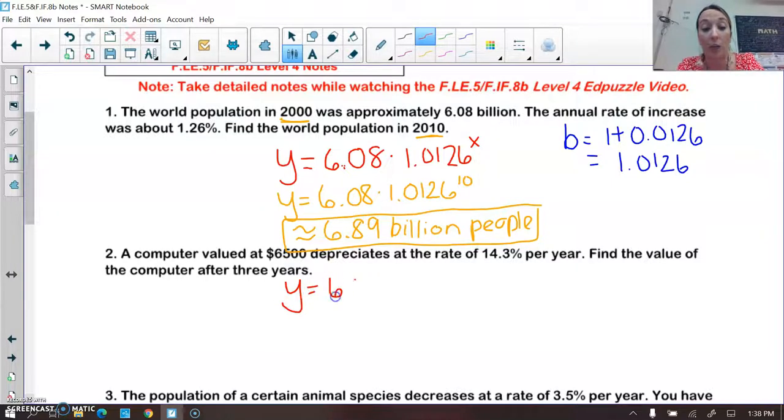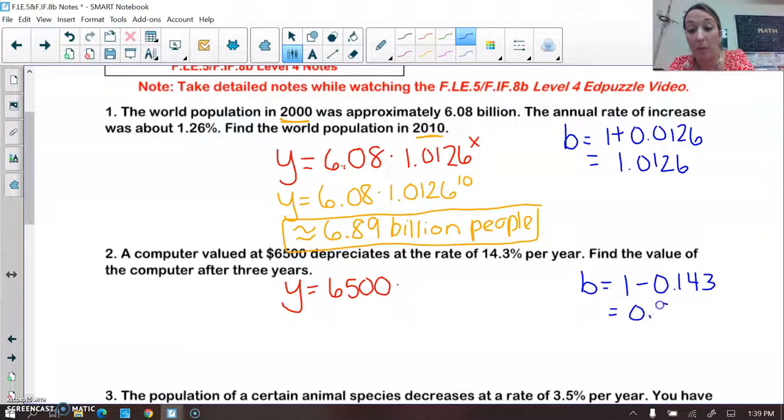Y is equal to, we start with 6,500. And I need to find my b value. My b value would be 1 minus my percent expressed as a decimal. So my b value comes out to be 0.857. Putting that into my equation, this is what my equation looks like.